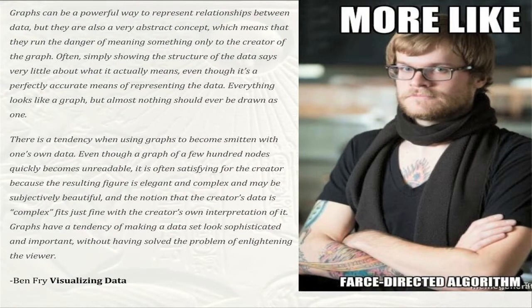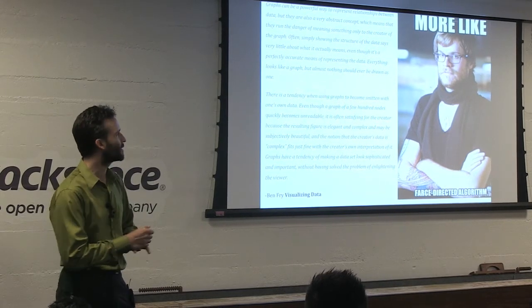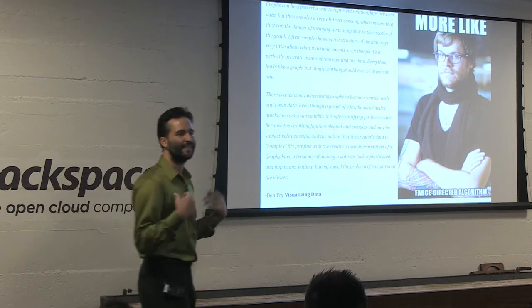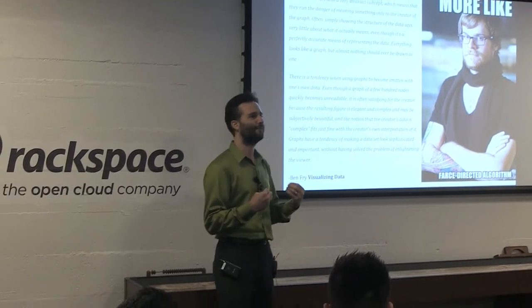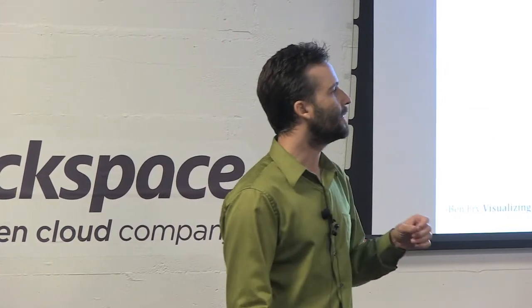We run into criticisms of network representation. Ben Fry's is the most prominent — in 'Visualizing Data,' he argues that almost all data can be represented as a network, but almost no data should be, because it's incomprehensible. It's seductive primarily to the person who's been playing with that network in Gephi for six months. When they present it, it wows an audience because it's abstract and interesting, but it doesn't actually pass on real fundamental information. And so adjacency matrices, hive plots, and other representations are often more comprehensible — especially with large networks.